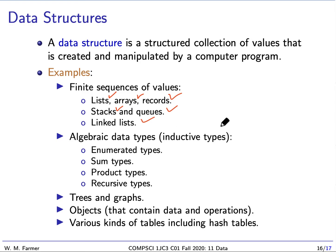In Haskell we have algebraic data types, which we often call inductive types. And there's many examples, enumerated types, sum types, product types, recursive types. We can have various kinds of trees and graphs. And we can have objects, which I just mentioned, objects contain together data and operations. And then there's many kinds of tables, including hash tables.